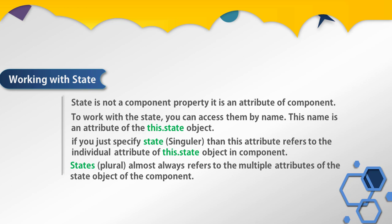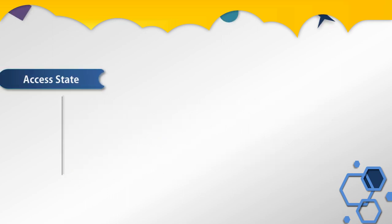React takes care of keeping views up to date when the state used in the view changes. In essence, when state changes, only the corresponding part of the view changes — everything else in the DOM remains intact. This is possible due to the virtual DOM. React developers use state to generate new UIs.